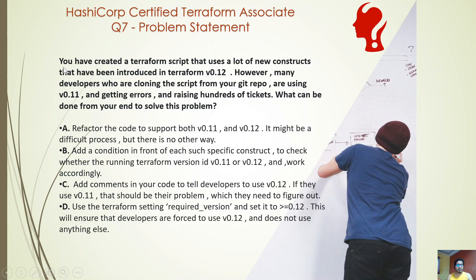So for example, what is happening is that you have written a Terraform script using version 0.12 constructs. These are new constructs — a lot of things have changed, many of them breaking changes between version 0.11 and 0.12. You have used a lot of these new things, for example the for_each object, which are only available in 0.12.